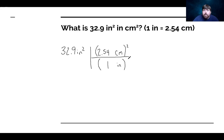So essentially, what this becomes is 32.9 inches squared, multiplied by 2.54 squared times centimeters squared, divided by one squared and inches squared. So the inches squared we know can now cancel with the inches squared. One squared is just one. And this basically becomes 32.9 times 2.54 squared. And that gets us 212 centimeters squared.